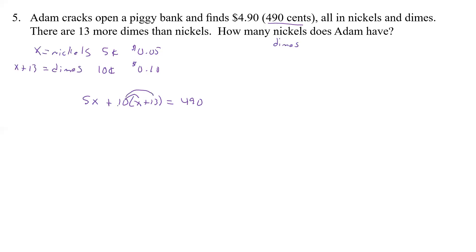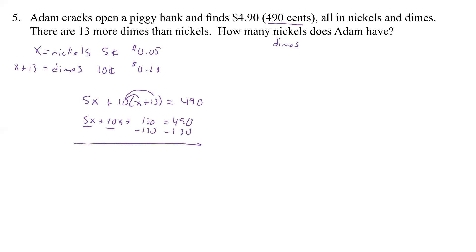This looks just like a problem we've been working all along — we just have to distribute and then add like terms. So we distribute to get 5X plus 10X plus 130 equals 490. We have like terms, so let's subtract 130 from both sides.